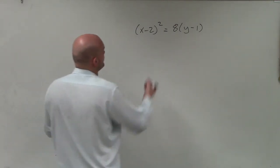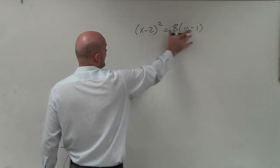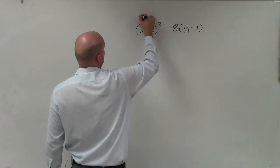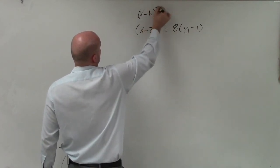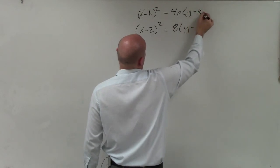I can also go back and look at my standard form for a parabola that has a vertex with different points. It's going to be (x-h)² = 4p(y-k).